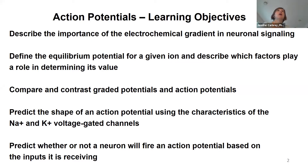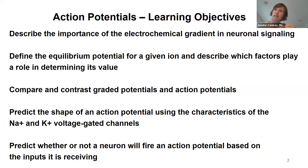Then we're going to talk about types of changes in membrane potentials. One type are going to be graded potentials, and another type will be action potentials — it's important to understand both types. We'll be comparing and contrasting them, and then get into the nuts and bolts of the action potential. Its shape is going to be dependent upon the characteristics of the channels. And then I'm going to try to pull it all together — why do we care about these changes and these signals? What are they doing in the nervous system?